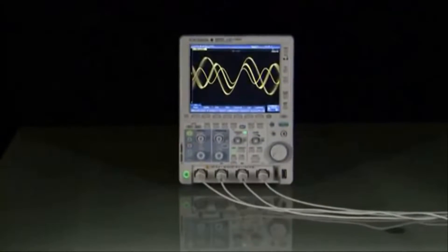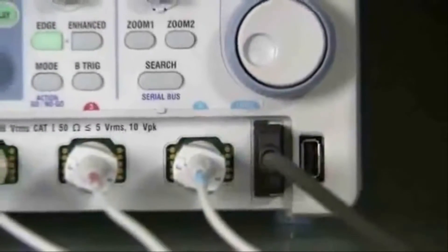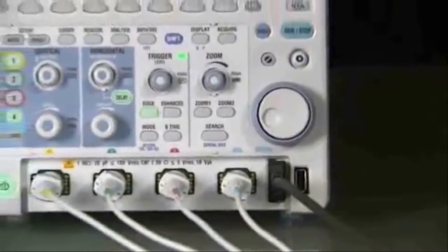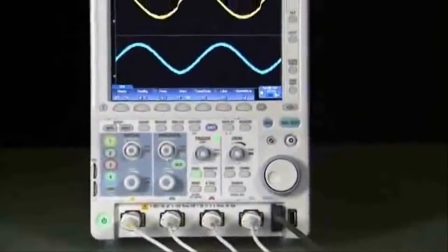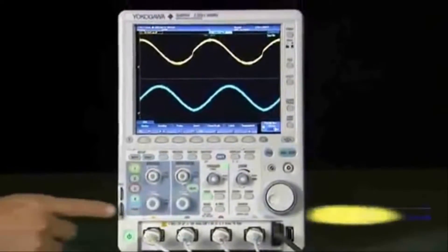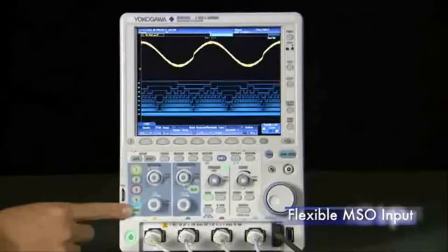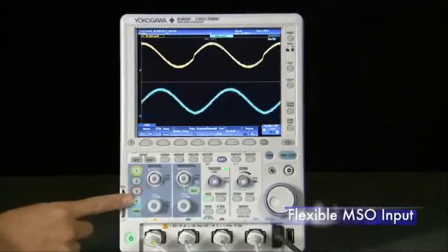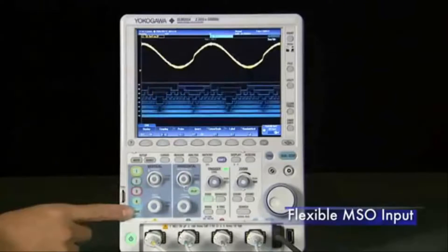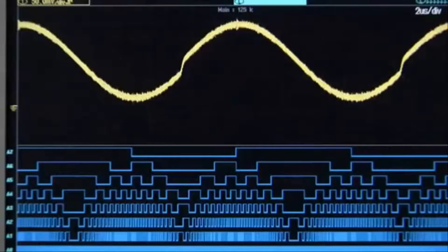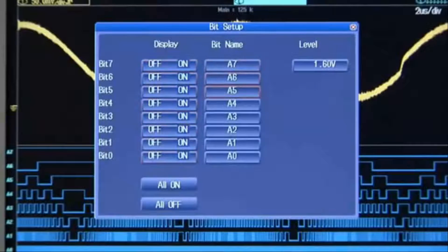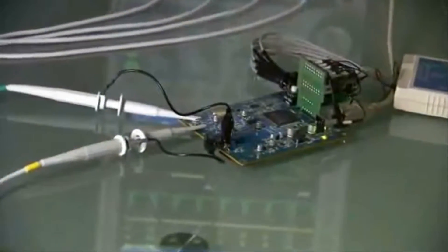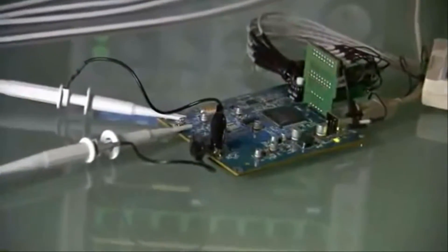The Yokogawa DLM2000 shatters the barrier to entry into mixed signal design. That's because using a clever and industry-first flexible MSO input, you can choose to activate Channel 4 as an analog input or use it to acquire 8 bits of digital logic instead when your application calls for it. Modern electronics include analog and digital circuitry.